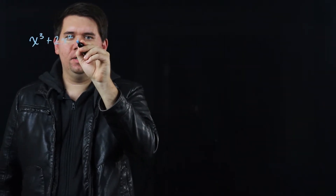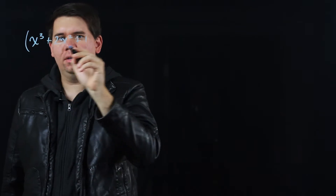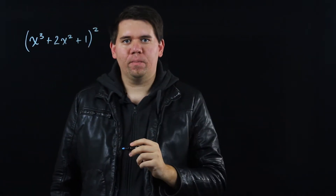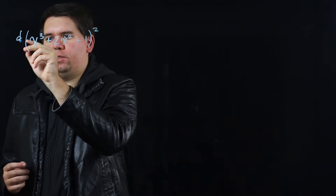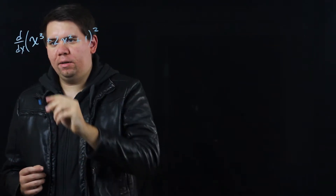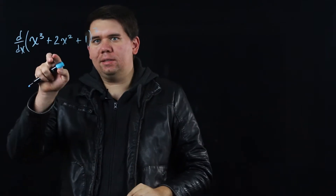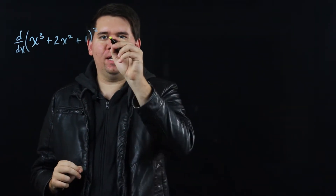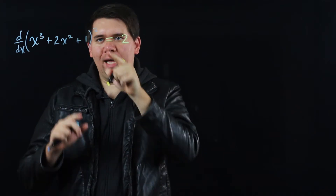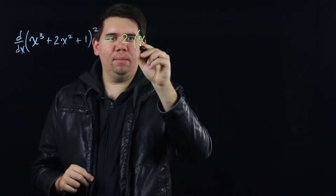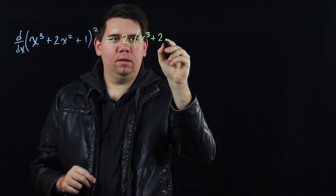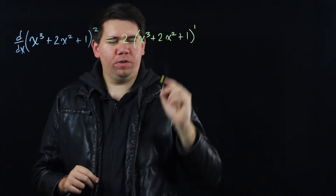How do you find the derivative of a function inside of another function? For example, suppose you have the function x cubed plus 2x squared plus 1 inside of the squared function. Often when students see this and they're asked to find the derivative, they're tempted to just say, well this is something squared and so the power rule tells us the power will just come down — the 2 comes in front and then I'm left with 2 times that thing to the first power.